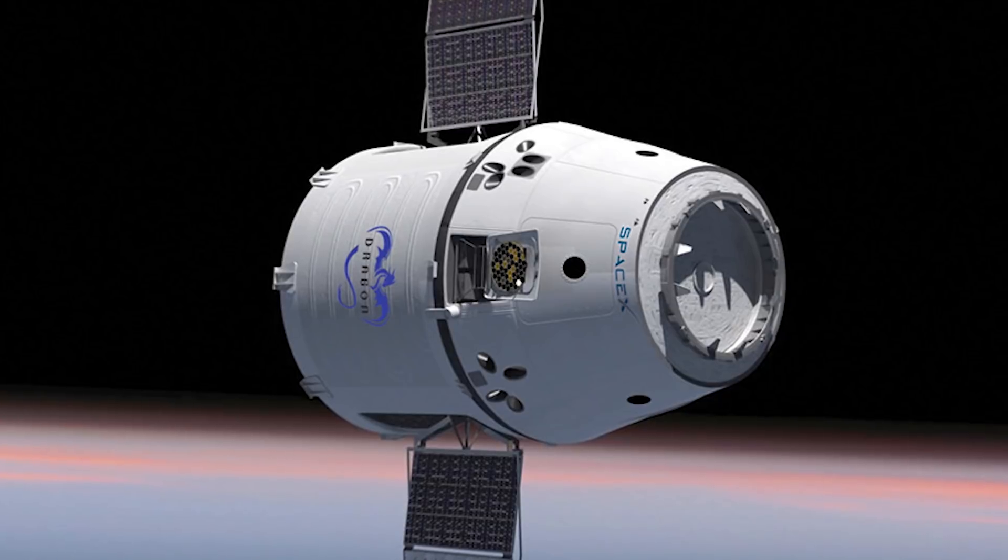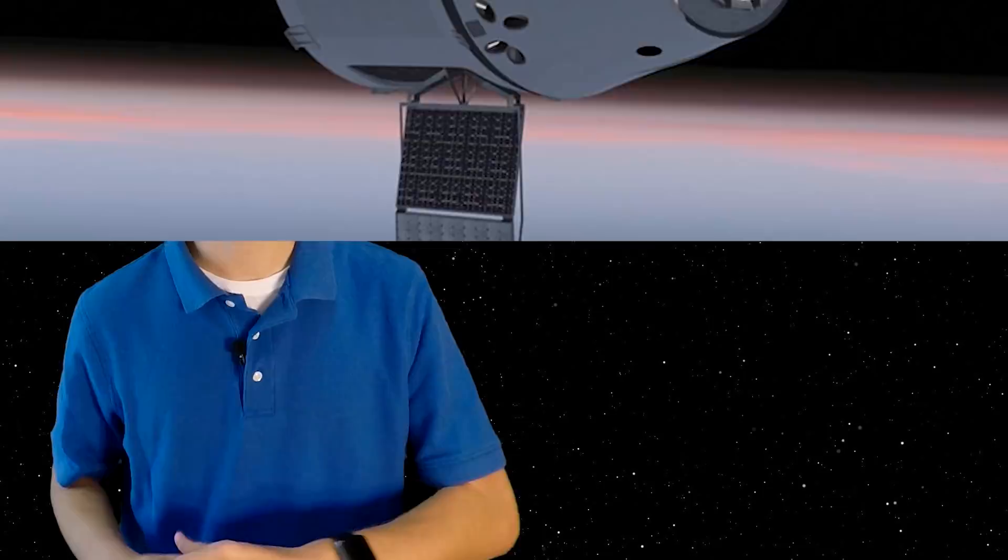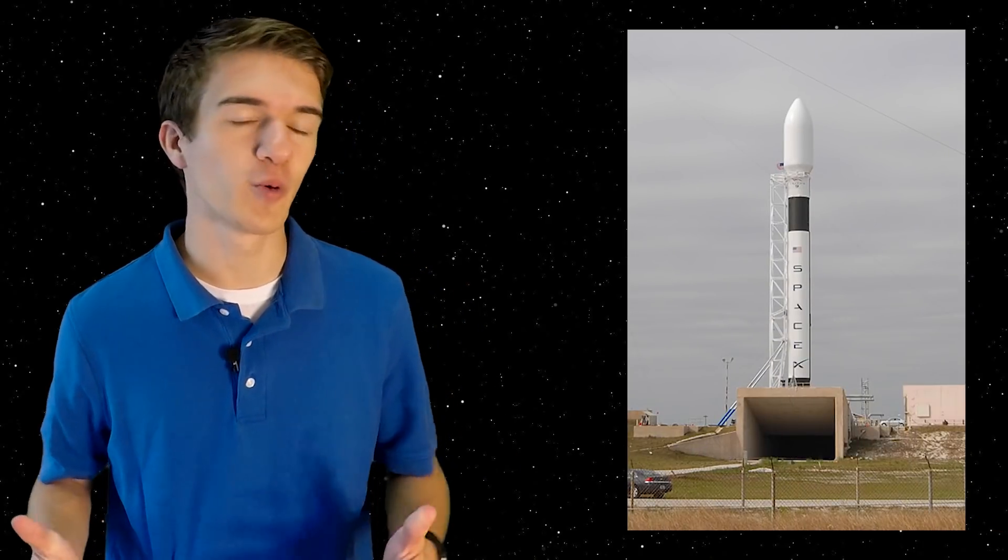But in terms of the maiden flight for the Falcon 9, SpaceX would use a Dragon capsule boilerplate, or basically the same mass and shape as the Dragon capsule, but not the real spacecraft. This was primarily used so that if the launch vehicle actually failed, they wouldn't be destroying one of their actual capsules. Now the first flight of the Falcon 9 was scheduled for September of 2009. However, this was eventually pushed back due to technical and political issues. Now the Falcon 9, being a much larger rocket, would need a real launch site. Therefore, it would be launching from Cape Canaveral Air Force Base.